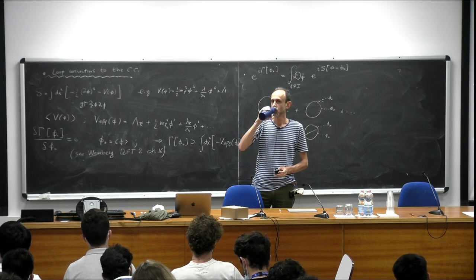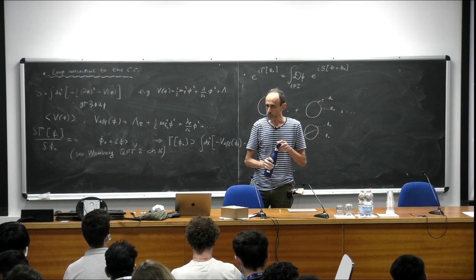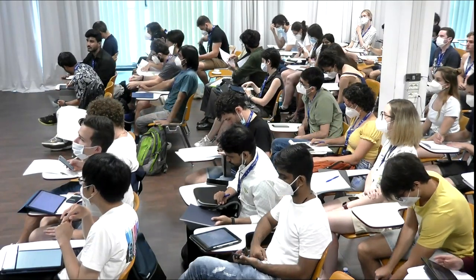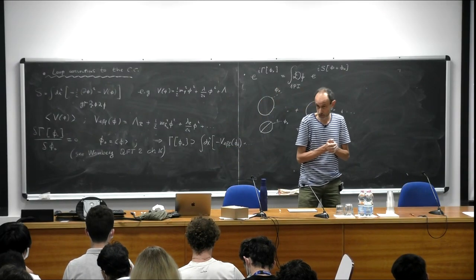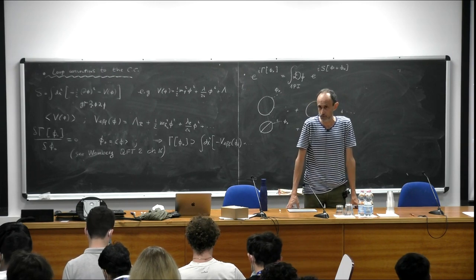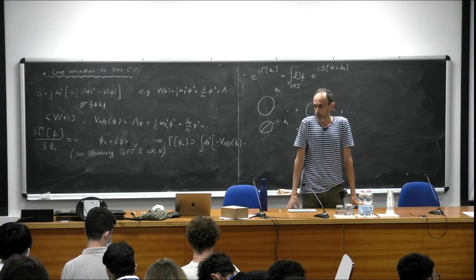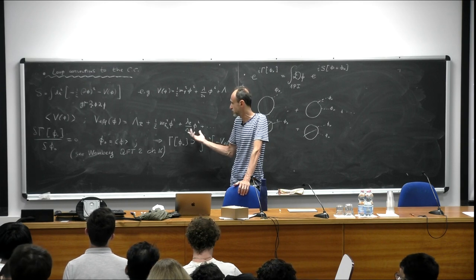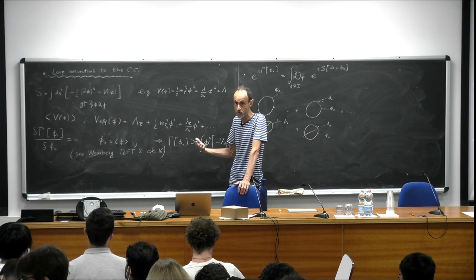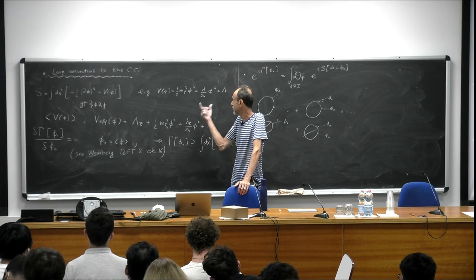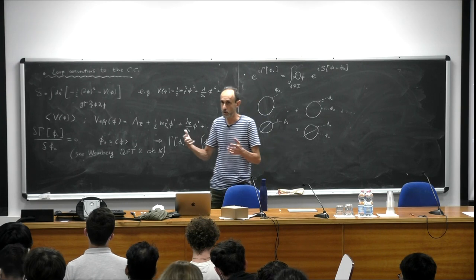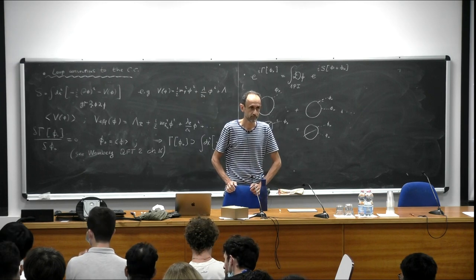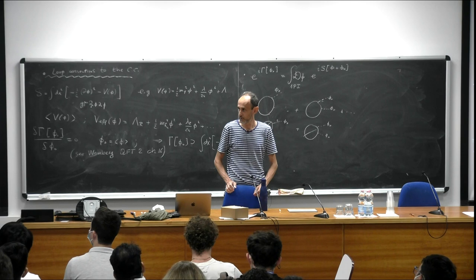In the potential I could include couplings with Standard Model particles, but for simplicity I assume only self-interactions. The interesting point will be to see how the value of the cosmological constant depends on the UV cutoff of the theory. It is time to stop here. Thanks.